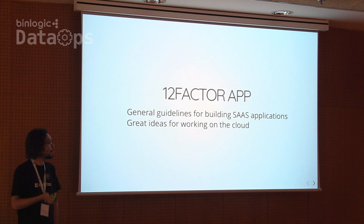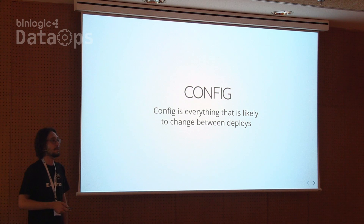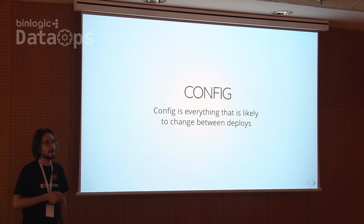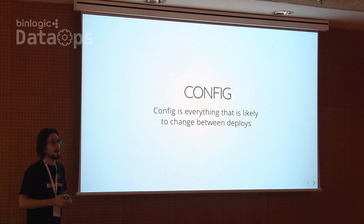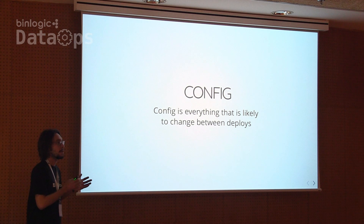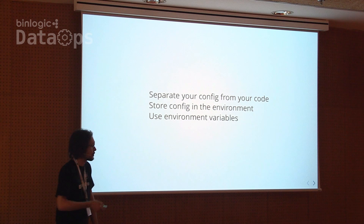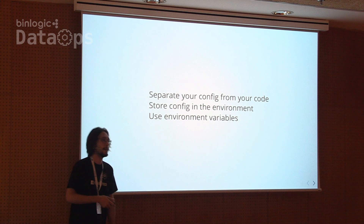The first thing I want to mention — and I think it's one of the most important — is about configuration. Configuration is everything that is likely to change between deployments. When we have an immutable infrastructure, we basically have one set of code, and this code will be deployed on all your environments. You have to make sure that configuration is the only thing that will change from pre-production to production to testing. So separate your configuration from your code — storing URLs, passwords, etc. in your GitHub is not a good way to do it.